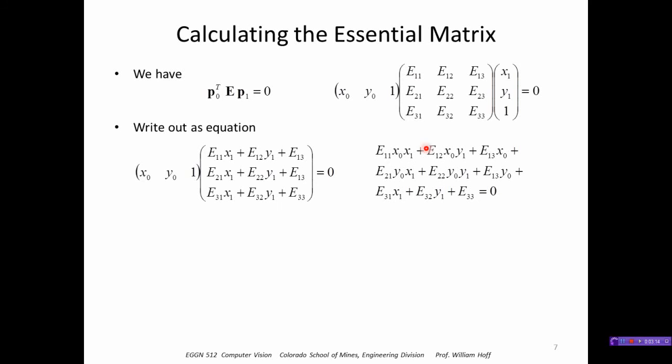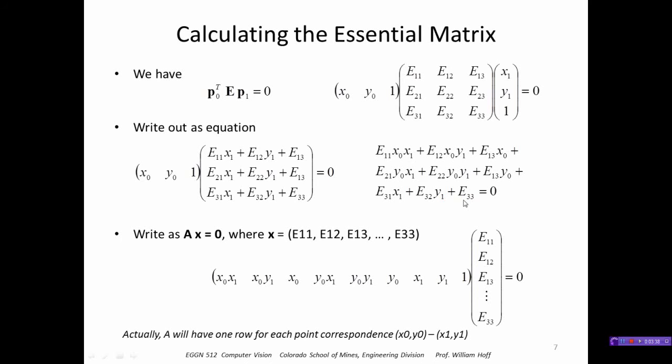Now I'm going to collect the unknowns—the E11, E12, etc.—into a vector x. It's a 9x1 vector on the right here, and my knowns will be the image coordinates that I've collected from this equation. Each image correspondence will generate a row of this matrix.